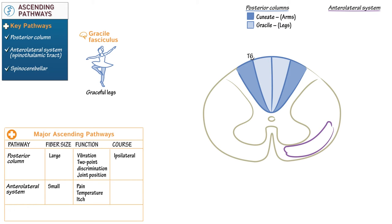Although the anterolateral system most notably includes the spinal thalamic tract and is sometimes considered synonymous with it, it doesn't just synapse in the thalamus — it also synapses in the hypothalamus and brainstem, which is why we refer to it as the anterolateral system. Anterolateral system fibers ascend the spinal cord contralateral to their side of origin; they cross to the opposite side, unlike the posterior column pathway.